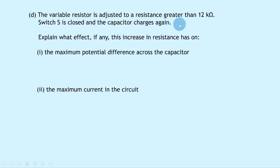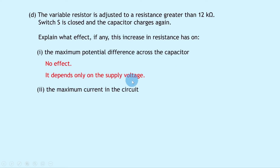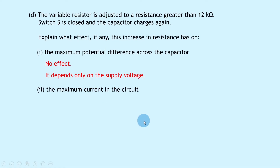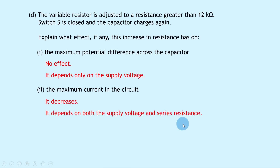Part D: the variable resistor is adjusted to a resistance greater than 12 kilohms and the capacitor charges again. For part 1, increasing the resistance has no effect on the maximum potential difference across the capacitor, because the maximum potential difference depends only on the supply voltage — when fully charged it equals the supply voltage. For part 2, increasing resistance decreases the maximum current, because the maximum current IMAX depends on both the supply voltage and the series resistance.